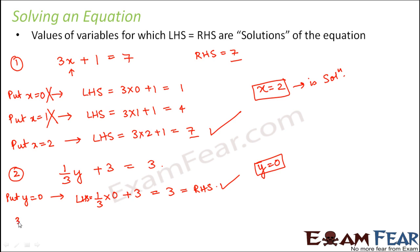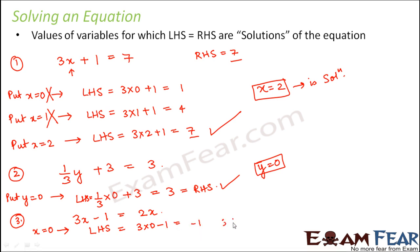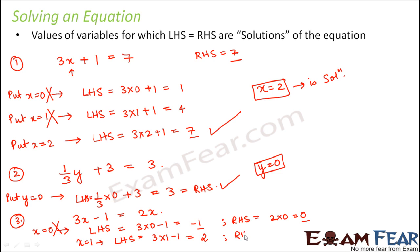Let us consider another equation: 3x minus 1 is equal to 2x. Here we have one variable x but two terms involving it. Trying x equal to 0: LHS is 3 into 0 minus 1, which is minus 1, and RHS is 2 into 0, which is 0. Since LHS and RHS are not equal, x equal to 0 is not the solution. Trying x equal to 1: LHS is 3 into 1 minus 1, which is 2, and RHS is 2 into 1, which is also 2. Since LHS equals RHS, x equal to 1 is the solution.